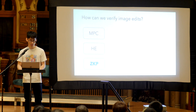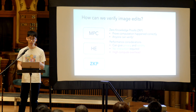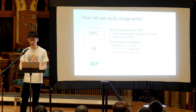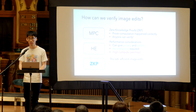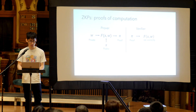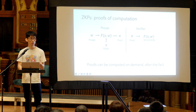Everyone here is familiar with these three techniques — multi-party computation, homomorphic encryption, and zero-knowledge proofs. They're really great for preserving privacy and validity, and they also don't have any interaction required, which is really important for the social media setting. Unfortunately, they have really high compute overheads. I'll briefly describe some of the techniques we implemented to have efficient image edits. These proofs can be computed on demand and after the fact, so even after you've released an image, someone can ask the image taker for the proof after the fact.